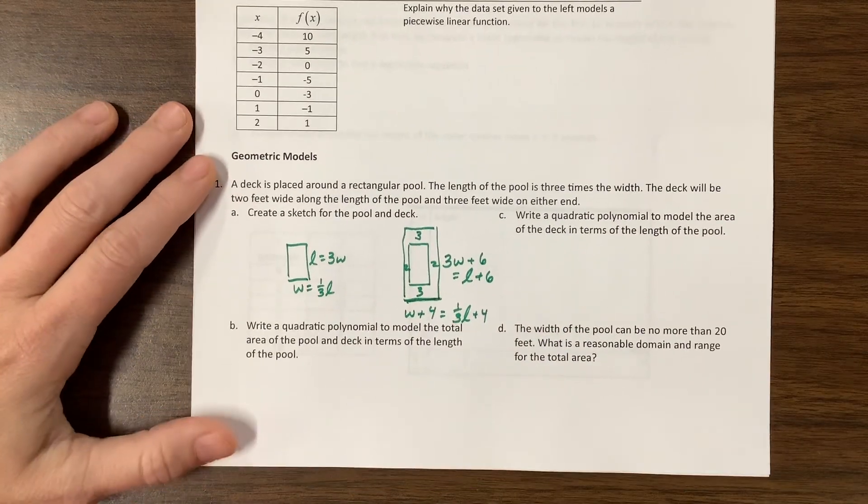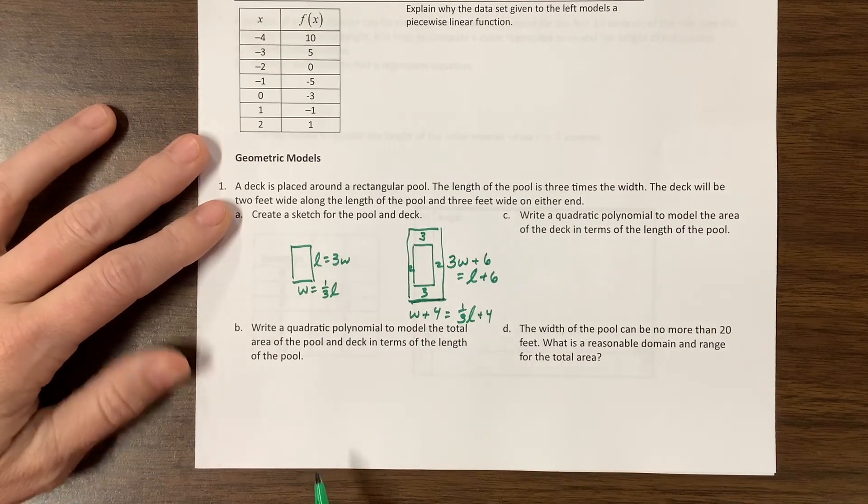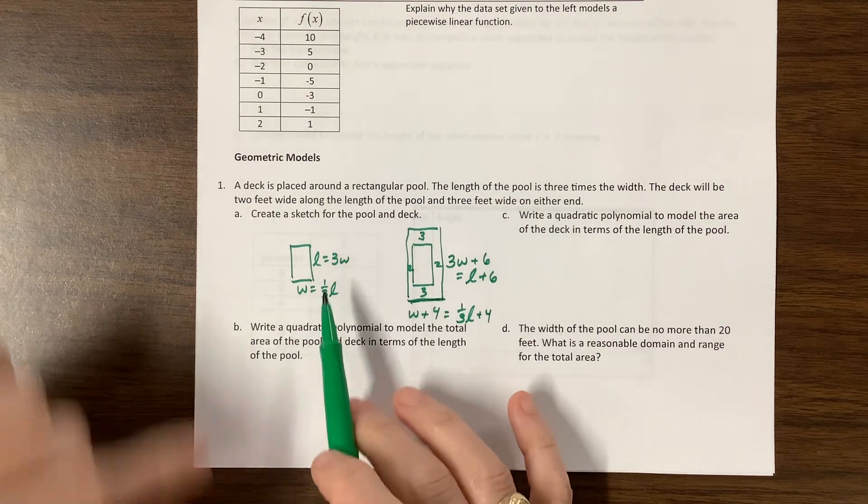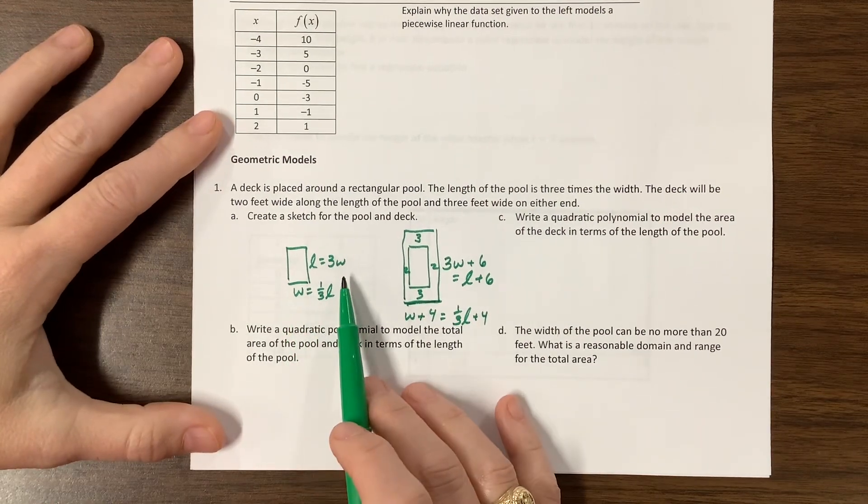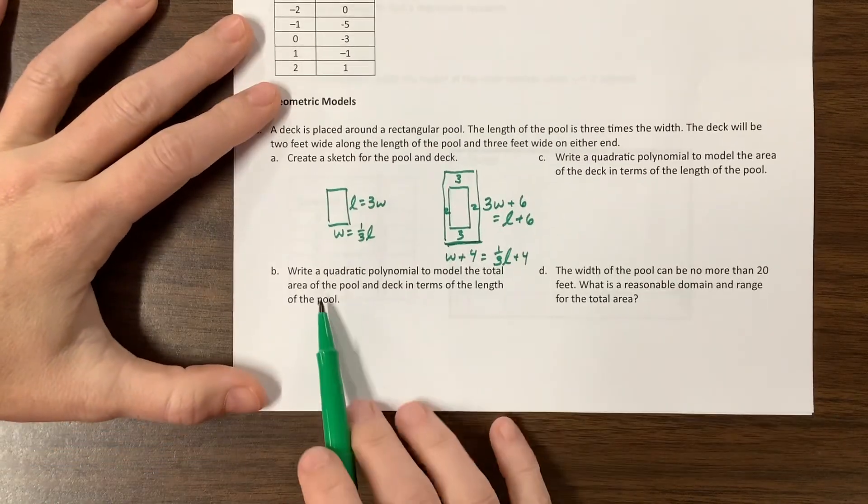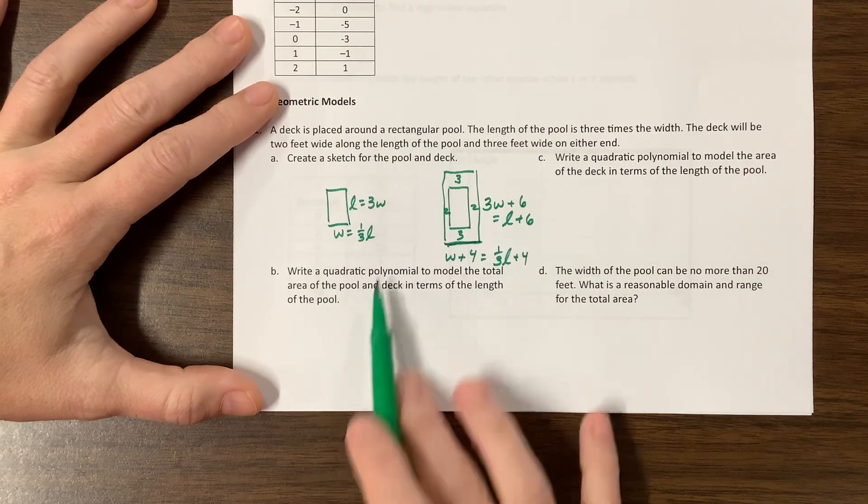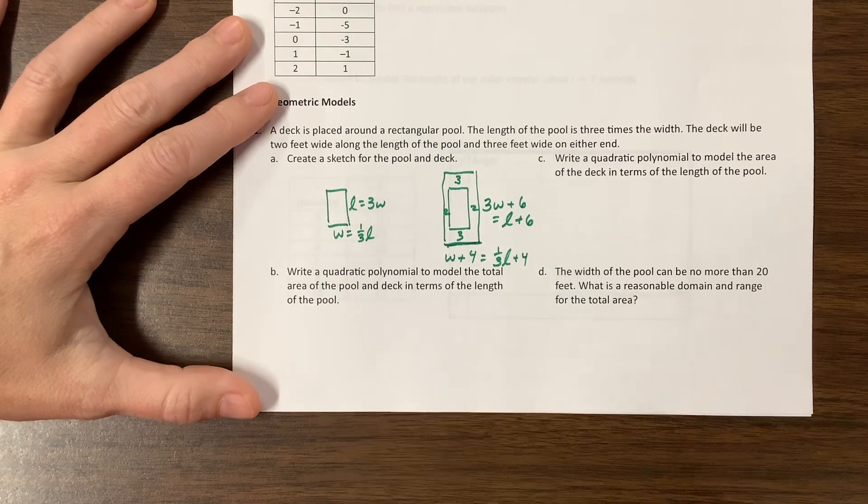And you're like, Ms. Kosh, why are you doing both in terms of w and l? Well, because they started writing, it's very easy, in my opinion, to write this in terms of the width. But then the questions talk about write the quadratic polynomial to model the total area of the pool and deck in terms of the length of the pool. Well, that's a little more annoying.